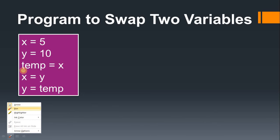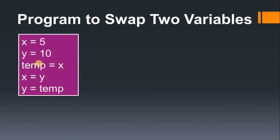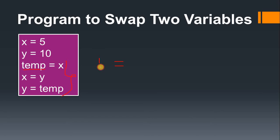For doing that replacement we need a certain kind of logic. We need the help of one more variable — suppose we take a temp variable. The three statements are: temp equal to x, x equal to y, y equal to temp. You have to keep these three statements in mind. Temp equal to x means the temp variable gets x's value, which is 5.